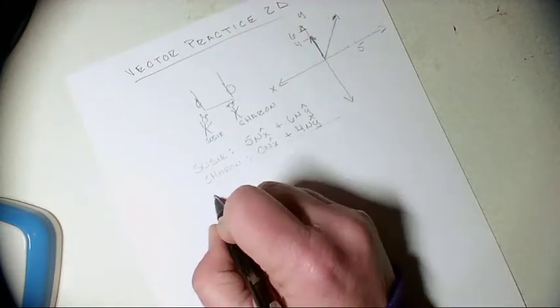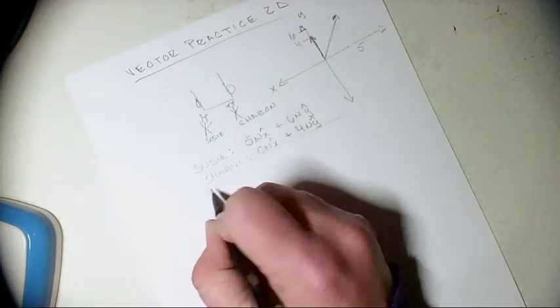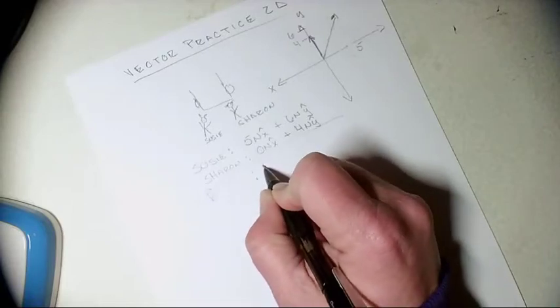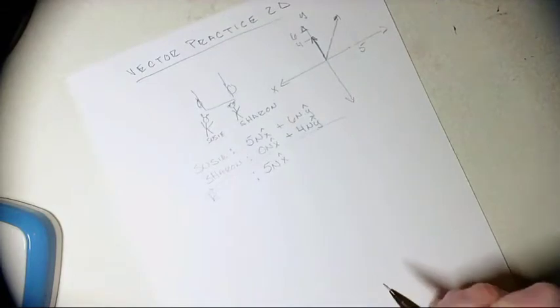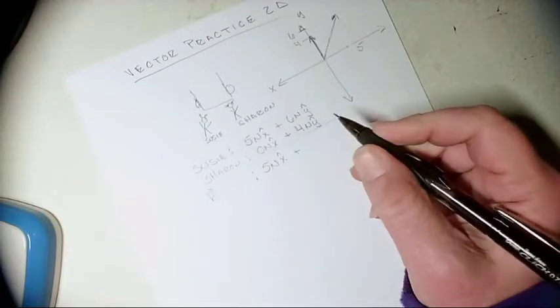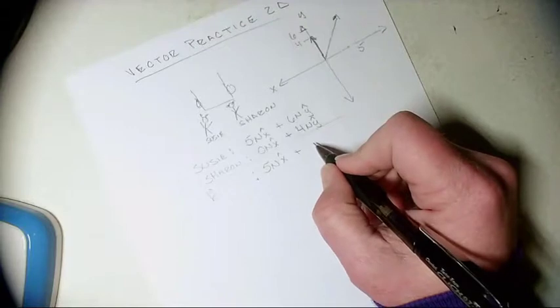But what's the net force going to be? So our resulting vector is going to be five newtons in the x hat direction and ten newtons in the y hat.